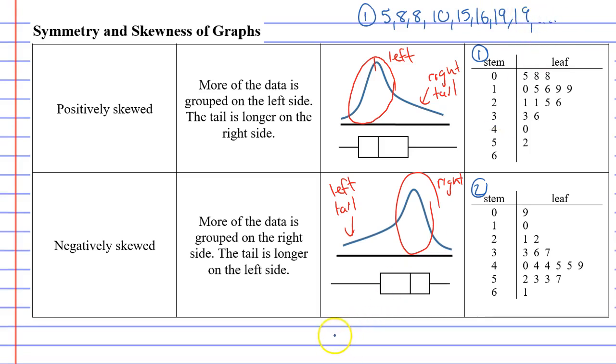If I was to do the second stem and leaf plot, you've got the numbers 9, 10, 21, 22, 33, and so on.